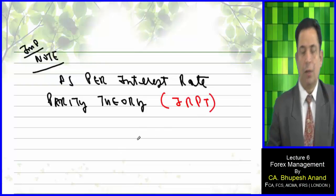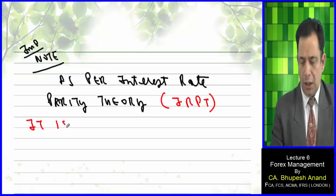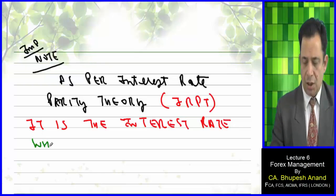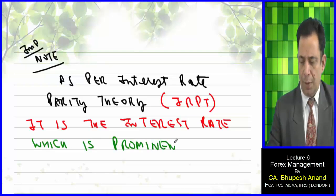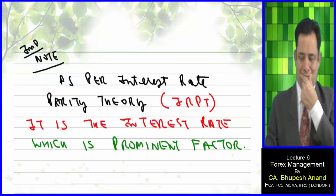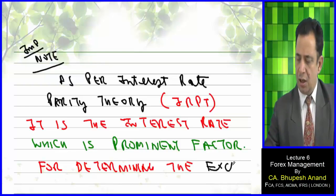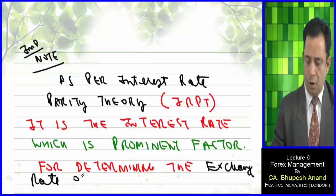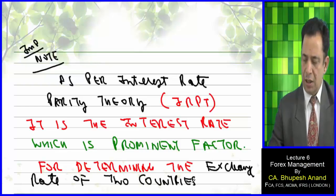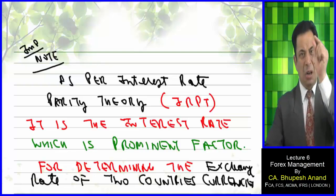As per IRPT — Interest Rate Parity Theory — it is the interest rate which is the most important and prominent factor for determining the exchange rate between two countries' currencies.